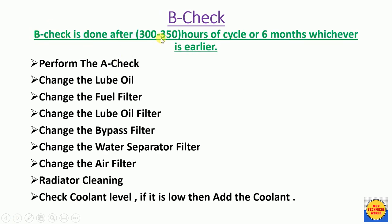B check is done after 300 to 350 running hours or six months, whichever is earlier. In B check, first repeat the A check, then change the lube oil and replace the fuel filter, lube oil filter, bypass filter, water separator filter, and air filter. Also clean the radiator with a cleaning agent and check the coolant level, adding coolant if it is low.